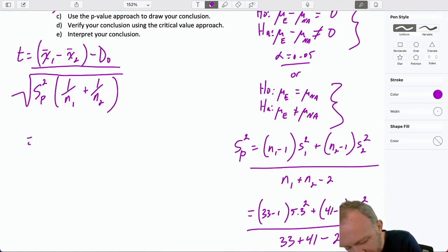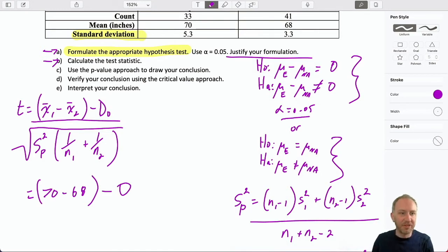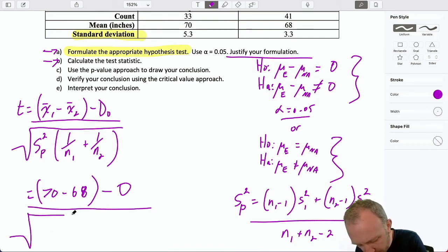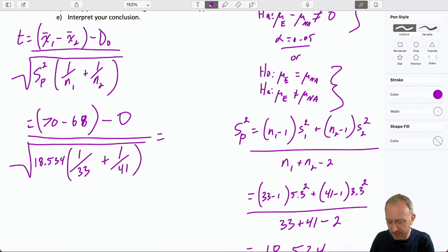So now I can come back and finish our calculation here. We have our sample sizes are 70 minus 68. That hypothesized difference is zero. I'm just putting it in there just to be complete, to be thorough. And here's where I need that pooled estimator was 18.534, and this is one over our sample sizes. And so this is going to give me 2 divided by square root of all of this. And that gives me 1.986. So there's my test statistic, 1.986.